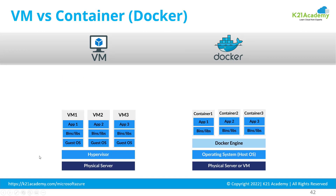With containers, you use a physical server or a virtual machine, install an operating system on top of it, and then install a container runtime on top of that operating system. Docker is one such container runtime, though there are other container platforms as well. On that container runtime you run multiple containers, and each container holds a microservice with all its dependencies.